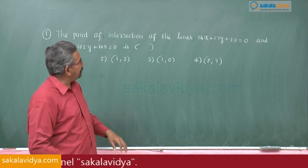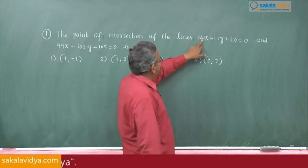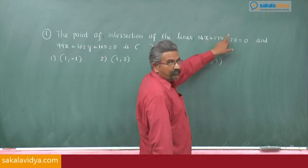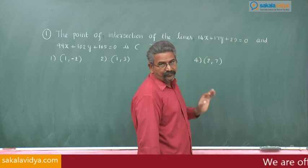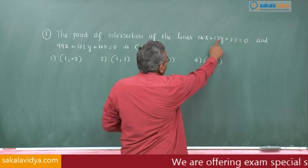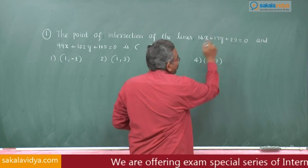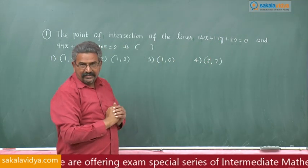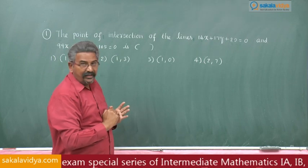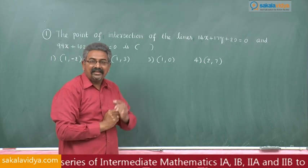That is why in order to solve these type of questions we have to observe the given equations. Let us observe: here 14x + 17y + 20 = 0. In this, 14 + 3 is 17, 17 + 3 is 20. That means 14, 17, 20 are in arithmetic progression.